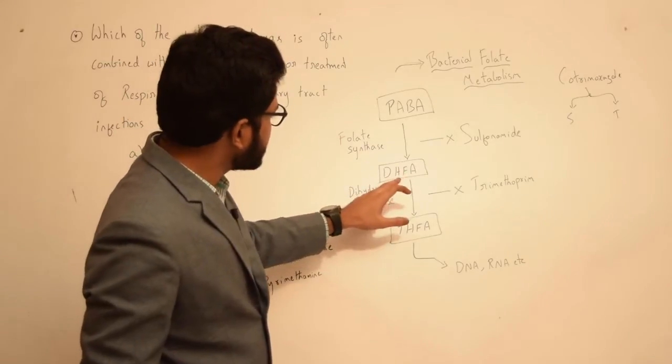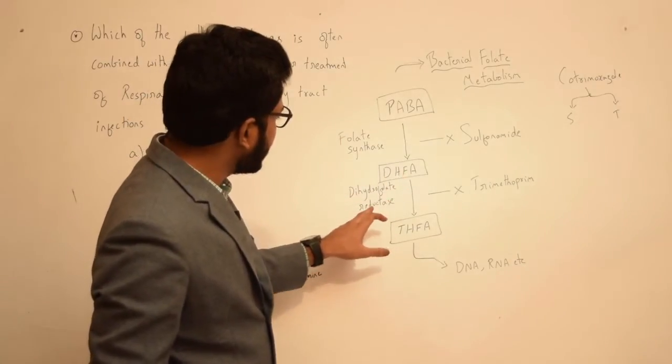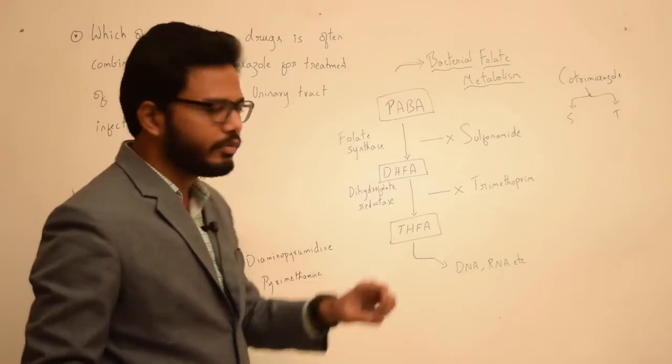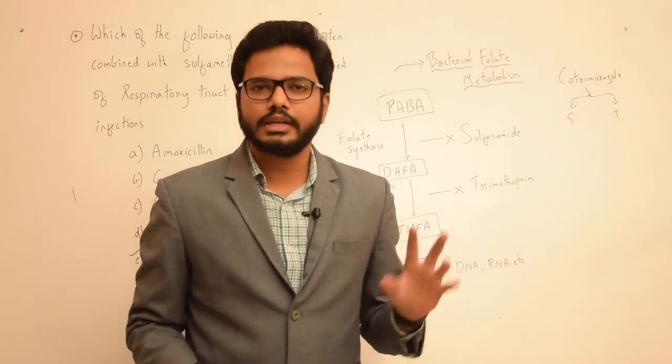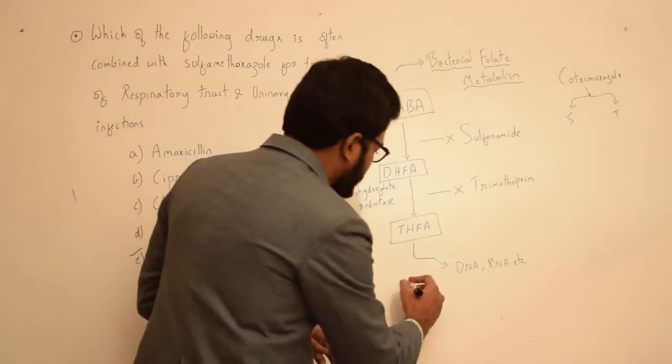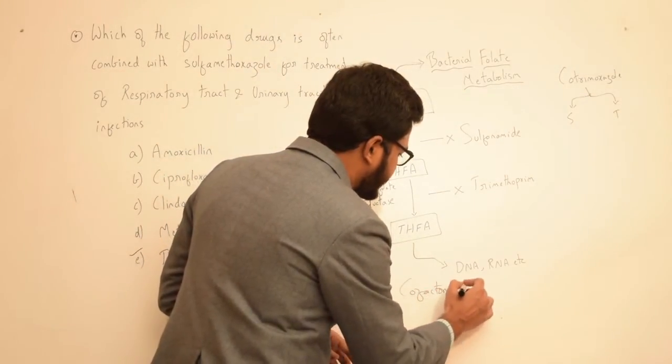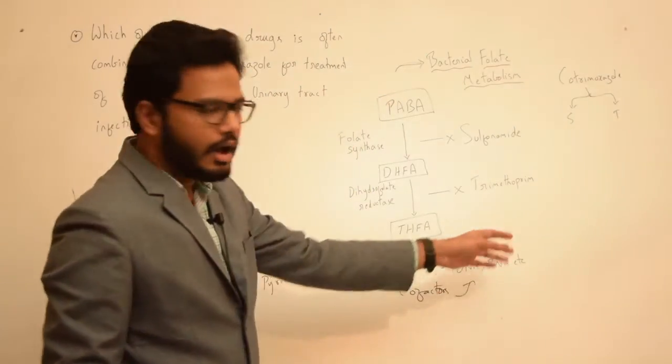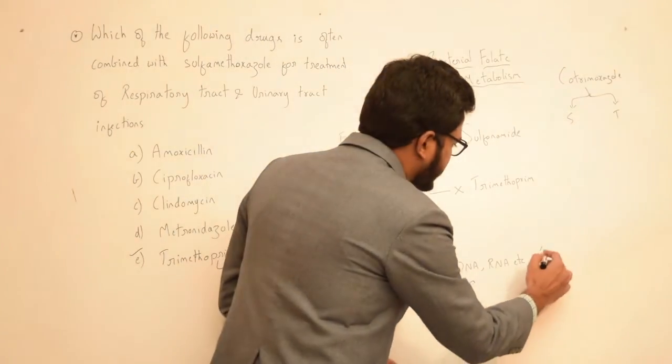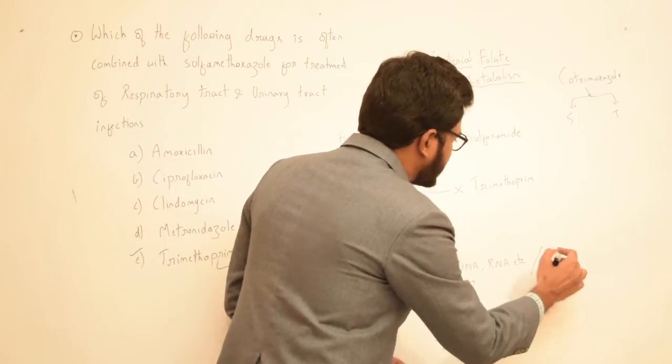If you observe this flowchart here, we have para-aminobenzoic acid (PABA) which forms dihydrofolic acid in presence of folate synthase, and this in turn, in presence of dihydrofolate reductase, forms tetrahydrofolic acid. This tetrahydrofolic acid is mainly used for production of various cofactors that are essential for synthesis of DNA, RNA, or proteins.